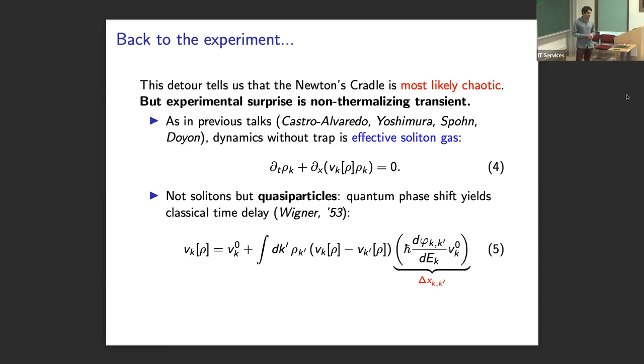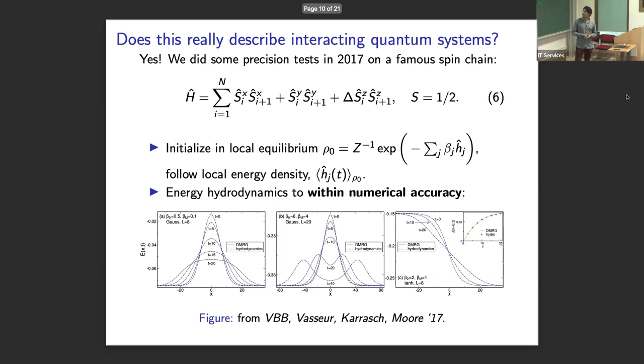So that's how we understand dynamics without the trap. Now, at first sight, it's a little surprising that this could actually describe a strongly interacting quantum system. So one thing we did do are some precision numerical test back in 2017 on a local equilibrium state, where here we have a temperature that is defined at each side of the Hamiltonian, and we follow the evolution of the on-site energy density. And I want to emphasize this is precision numerics. The tensor network method used here has a controllable discarded weight, which is usually at most 10 to the minus 6 and often 10 to the minus 9 in practice.